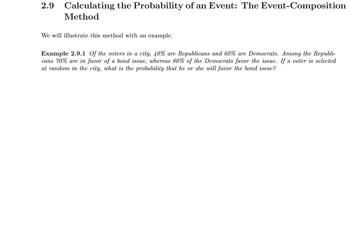In this section, I am going to talk about calculating the probability of an event using the event composition method. Let me explain this using this example. Of the voters in a city, 40% are Republicans and 60% are Democrats. I use R for the Republicans and D for the Democrats. So, probability of R equals 0.4 and probability of D equals 0.6.